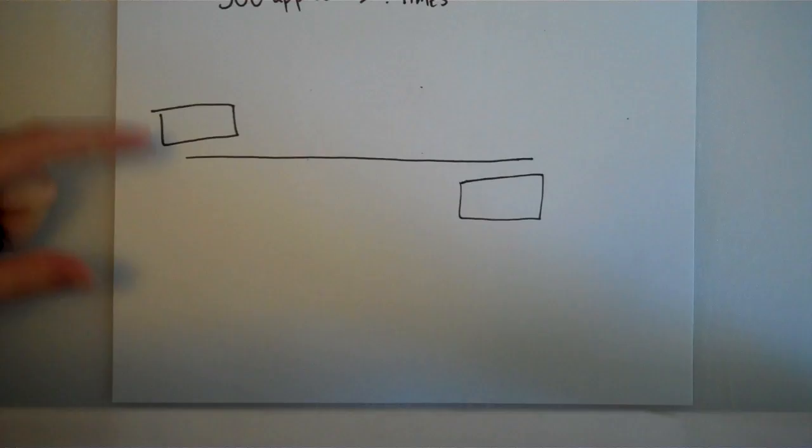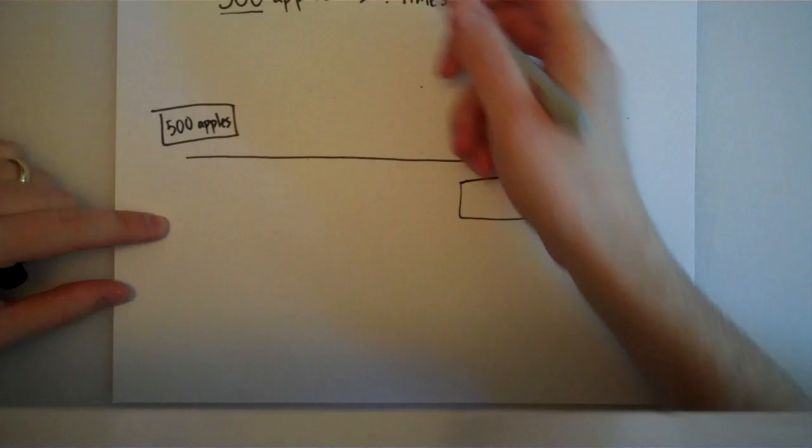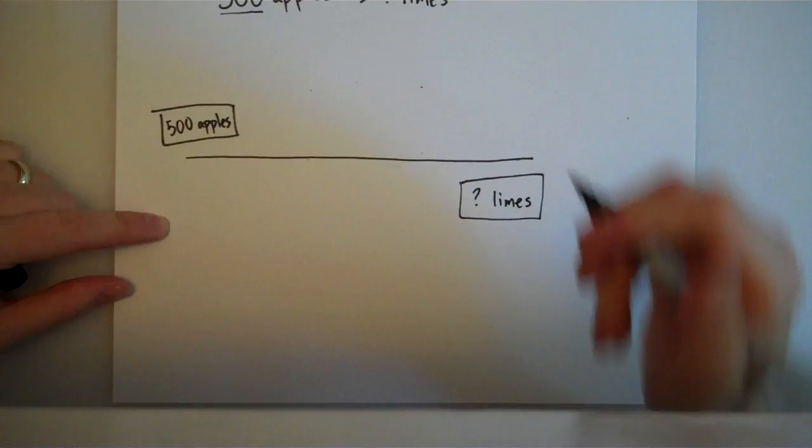Well, let's go ahead and set this thing up. What number goes in the top left-hand corner? Well, the only number we have, which is 500. So, 500 apples goes in the top left-hand corner. Limes goes over here in the bottom right. So, question mark limes right there. Now, I need some dominoes. I need some conversion factors.